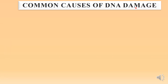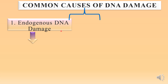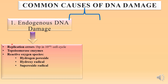Let us look at the common causes of DNA damage. DNA damages are of two types. First, endogenous DNA damage, which is caused by replication errors — around one base pair in 10^10 per cell cycle. Errors may be caused by topoisomerase enzyme while removing supercoils, and also by reactive oxygen species such as hydrogen peroxide, hydroxy radical, and superoxide radical.